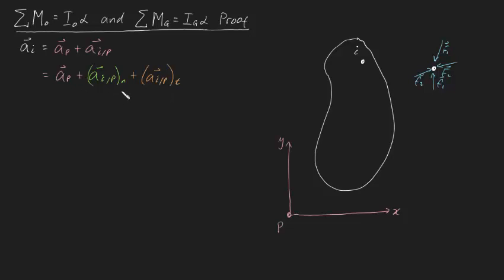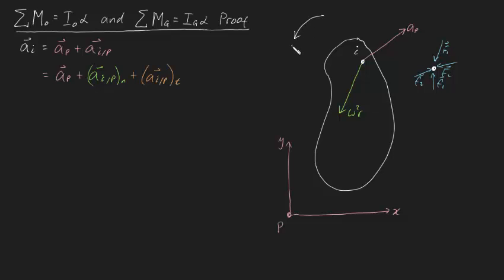Let's break this formula into something more useful and draw these vectors superimposed on particle i. We can write the acceleration of i relative to P as the normal component plus the tangential component. I don't know the direction of point P's acceleration, so let's assume it's in this direction — that's the acceleration of point P with magnitude AP. The normal component of i relative to P faces towards point P with magnitude ω²r, from circular motion, where ω is the angular velocity of the rotating body. The tangential component has magnitude αr, where α is the angular acceleration.